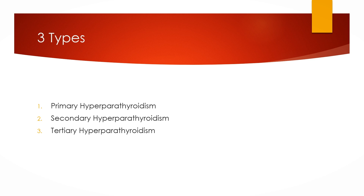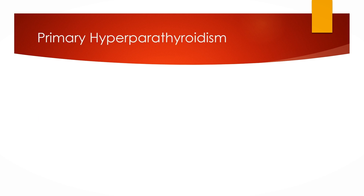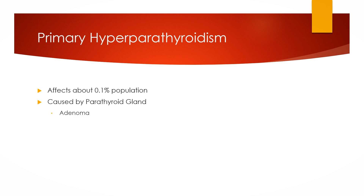There are three types of hyperparathyroidism: primary, secondary, and tertiary, and I will discuss all three types one by one. Primary hyperparathyroidism affects above 0.1% of the population and is caused by parathyroid gland adenoma in most cases, but occasionally parathyroid hyperplasia, and rarely carcinoma, can be a cause of primary hyperparathyroidism.